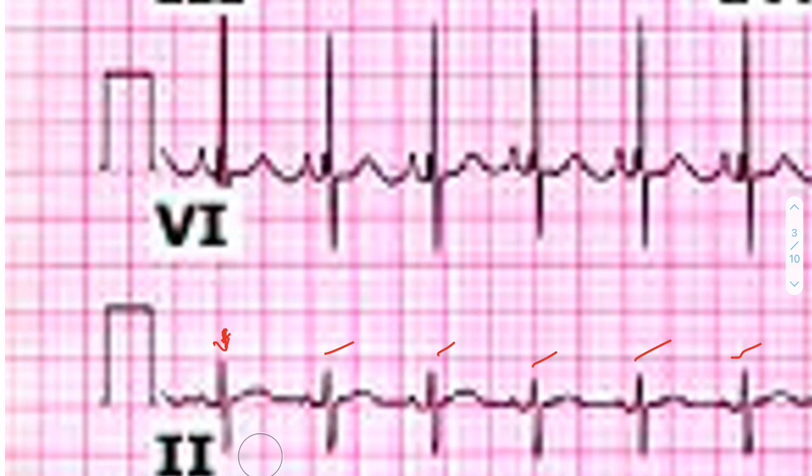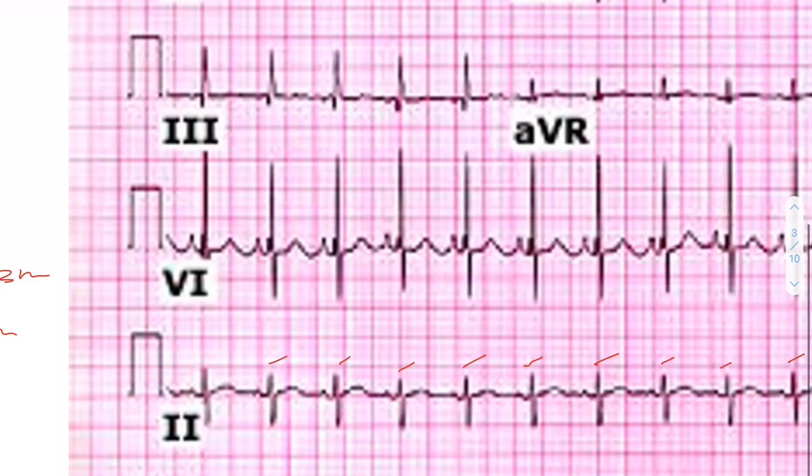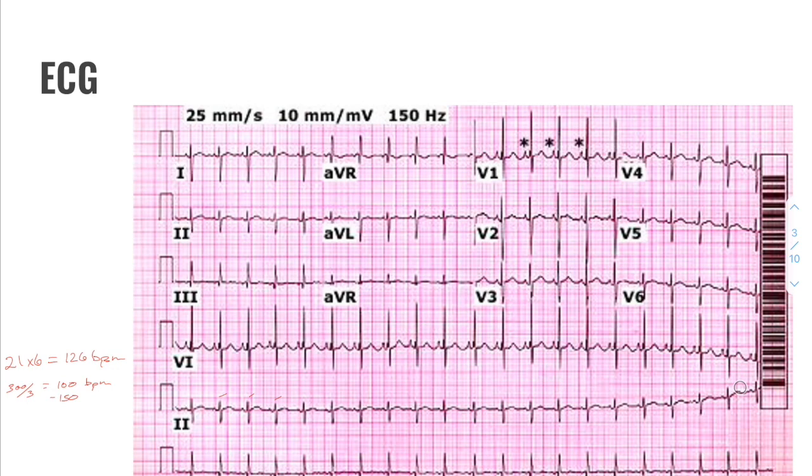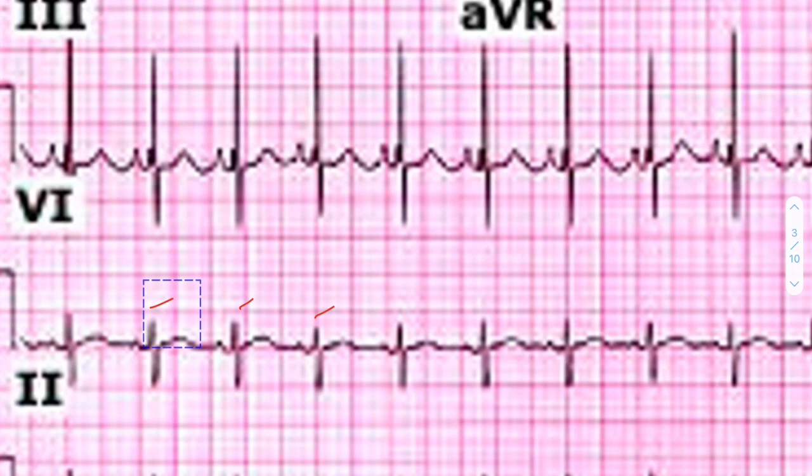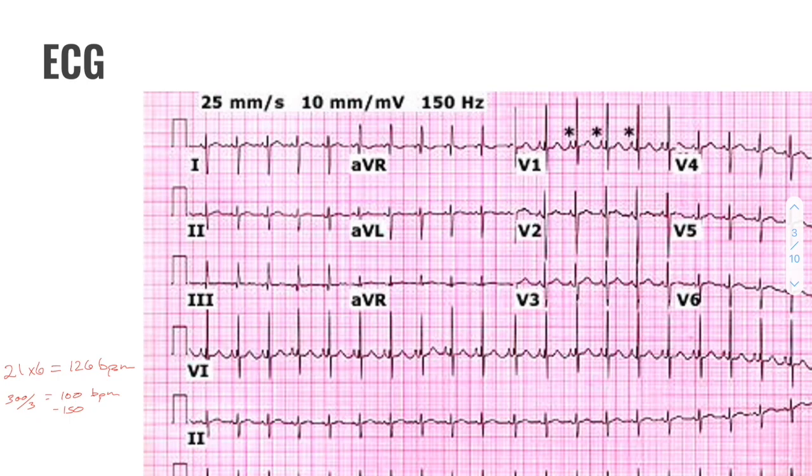Next thing to do is have a look at the rhythm and see if our rhythm is regular, irregular, or what's going on there. Same as every week, we're going to take the marks that I've made here on our R peaks and then transfer them over to subsequent R peaks and see if they line up. It's looking like yeah, they line up pretty well across the board, so it looks like we have a sinus rhythm for this ECG.